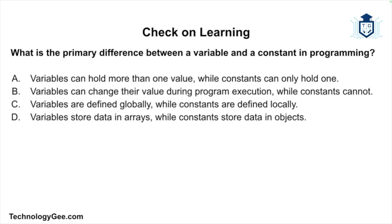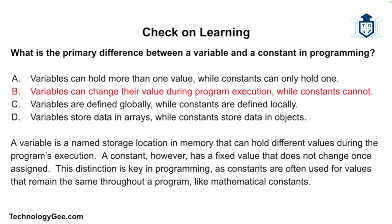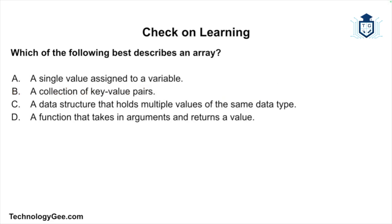Check on learning — Question 1: What is the primary difference between a variable and a constant in programming? Is it that variables can hold more than one value while constants can hold only one? Variables can change their value during program execution while constants cannot? Variables are defined globally while constants are defined locally? Or variables store data in arrays while constants store data in objects? The correct answer is: variables can change their value during program execution while constants cannot. A constant has a fixed value that does not change once assigned, often used for values like mathematical constants.